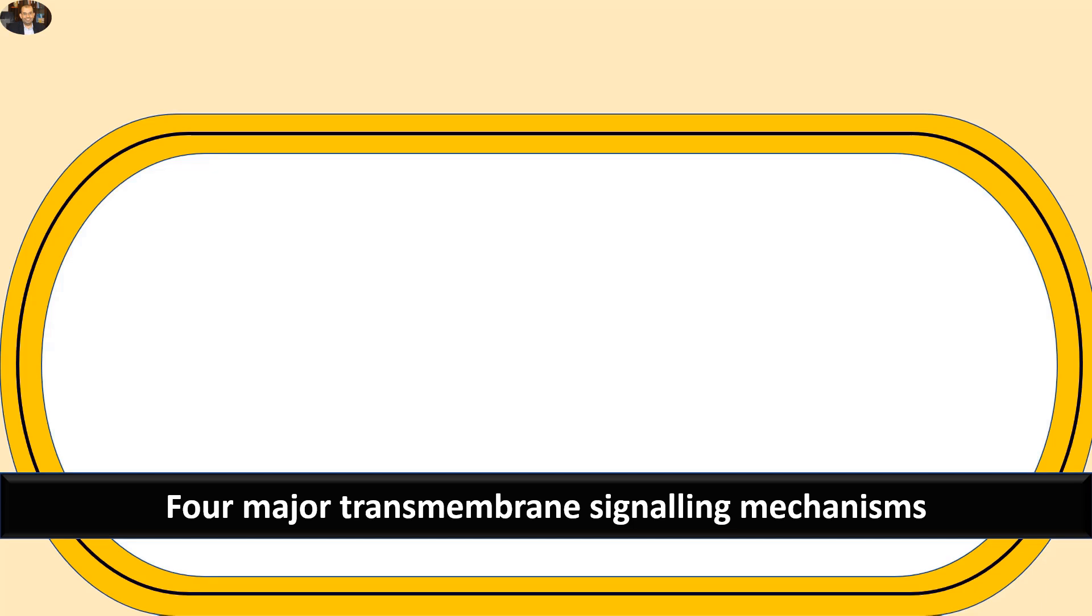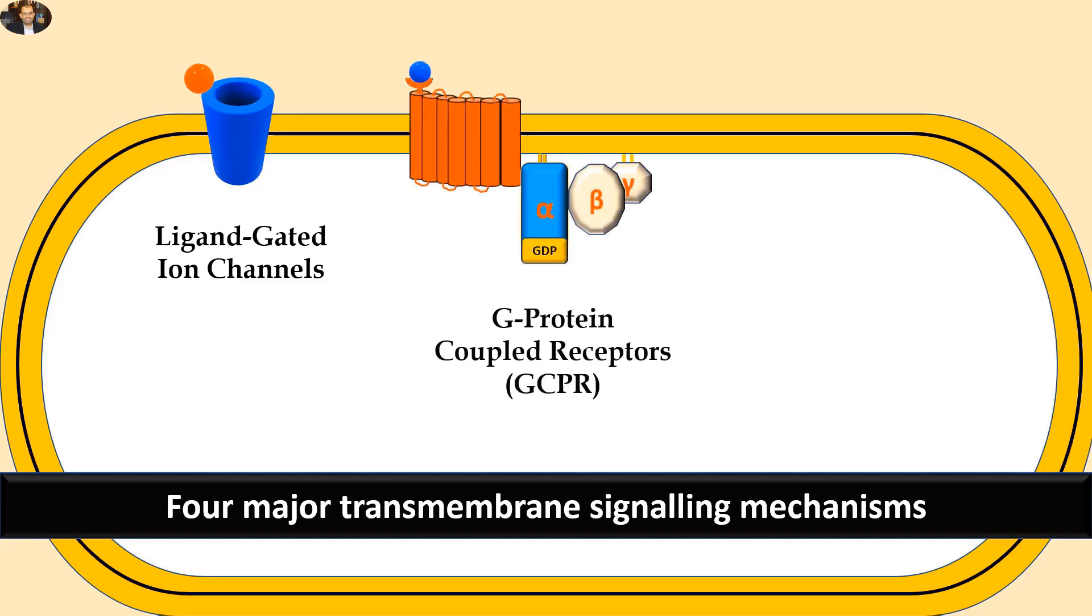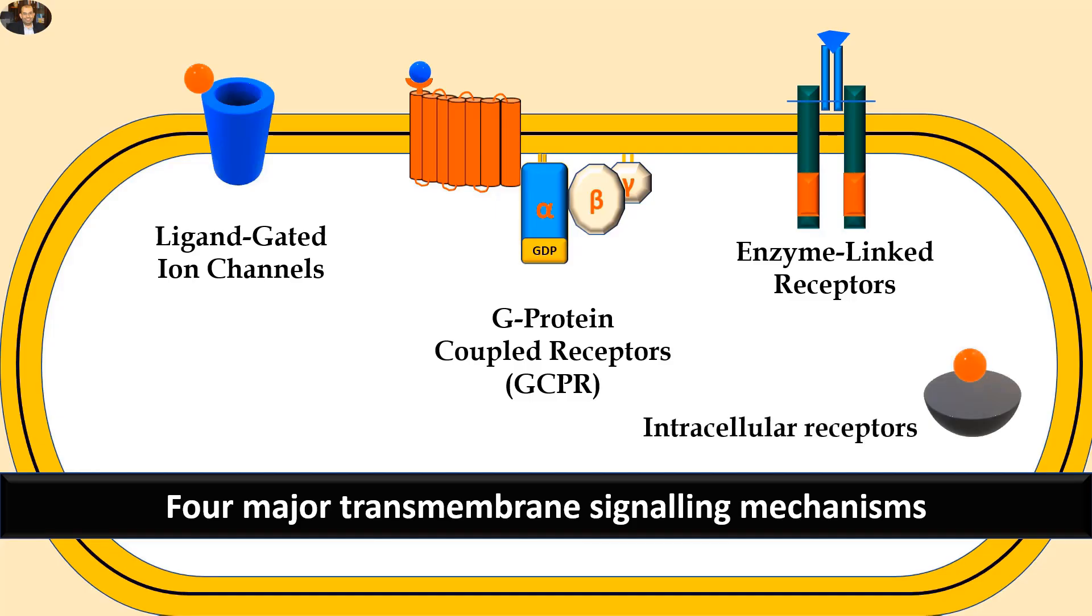There are four major transmembrane signaling systems: ligand-gated channels, G-protein-coupled receptors, enzyme-linked receptors, and intracellular receptors.